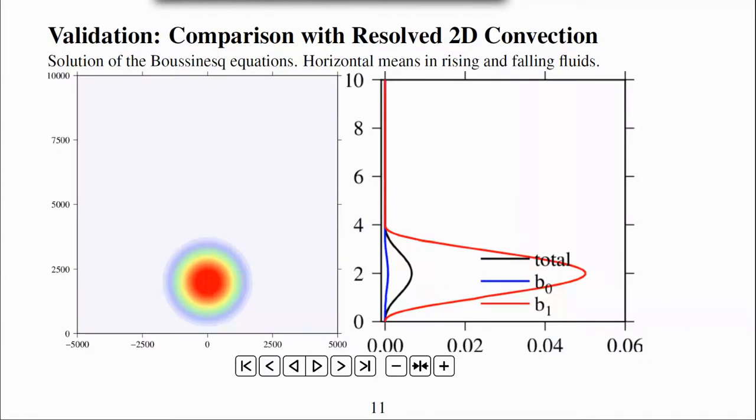In order to validate the multi-fluid model, I will show comparisons with a well-resolved single-fluid Boussinesq simulation of a rising bubble. The buoyancy is on the left and the horizontal mean buoyancy of the rising and falling fluids and the total horizontal mean buoyancy is on the right.